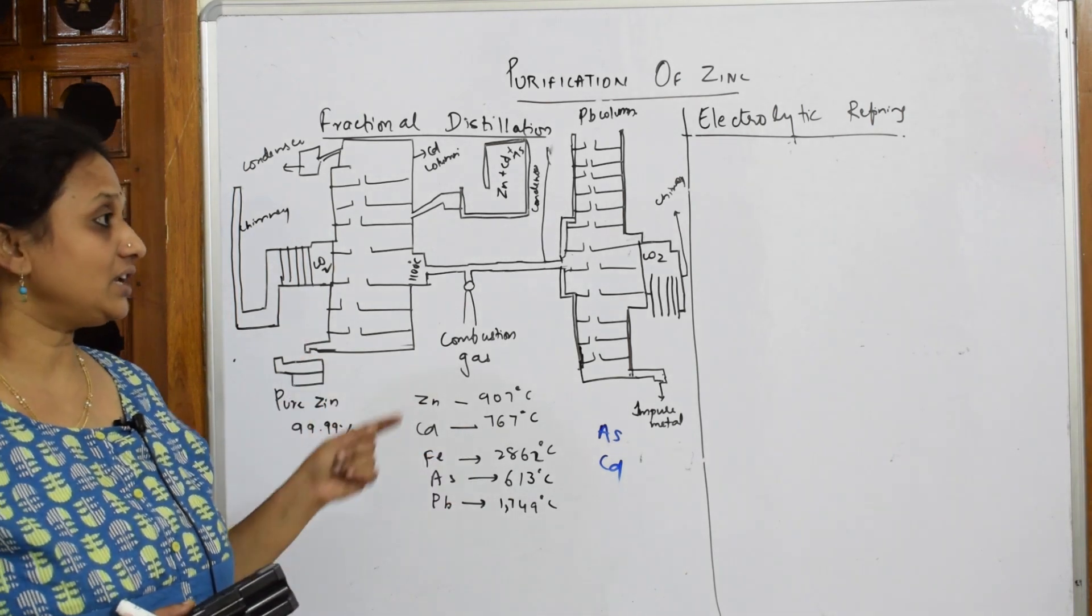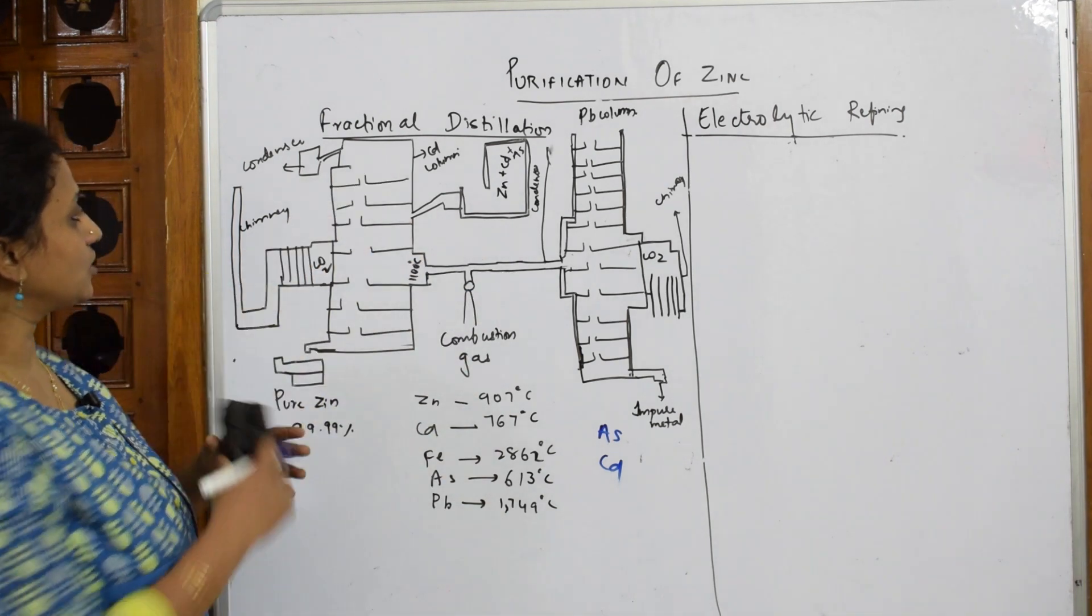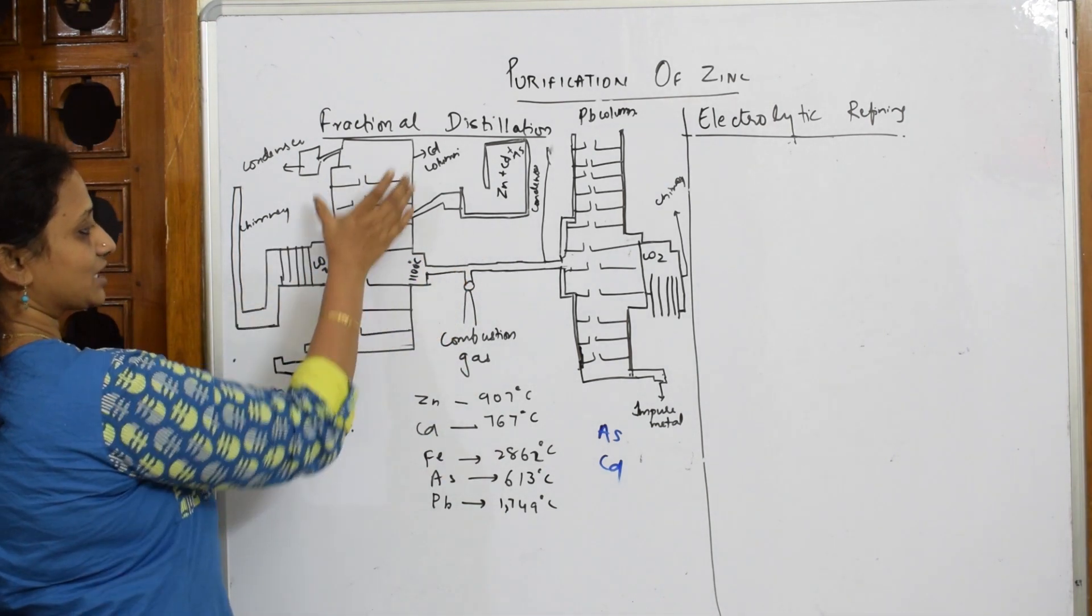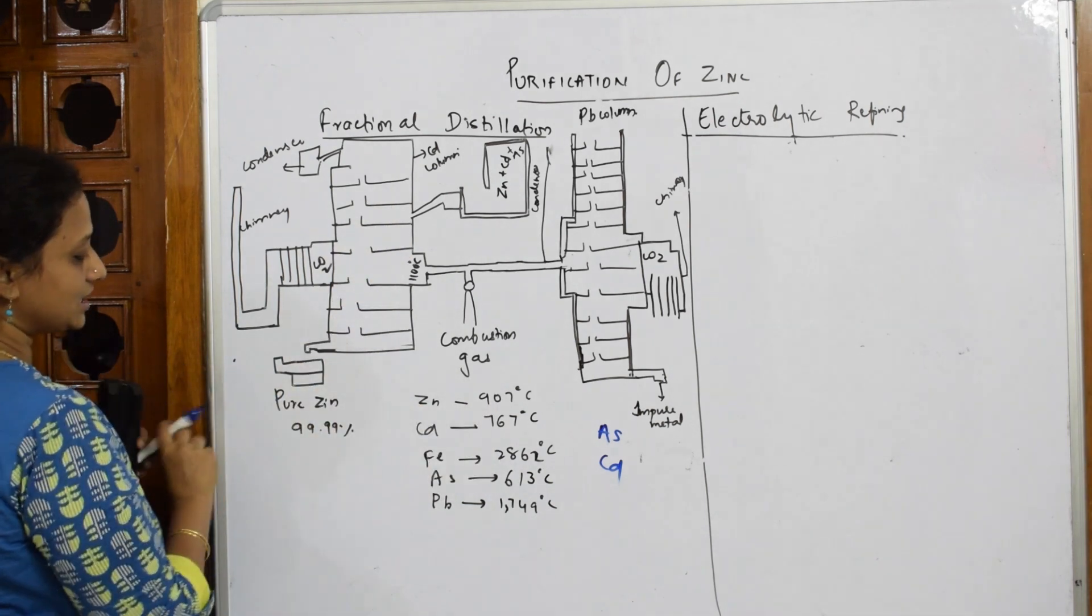Finally at 900 degrees, you get zinc which is 99.9% pure. Later, when the temperature reaches 1700°C, your lead is out.